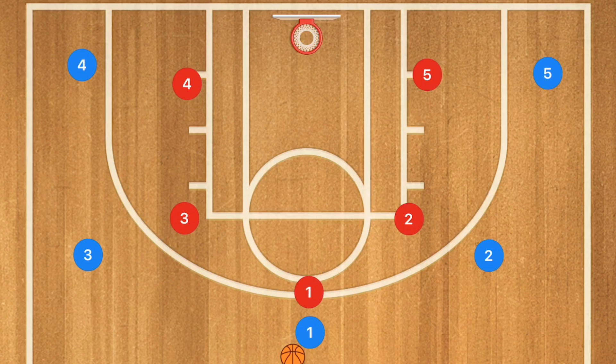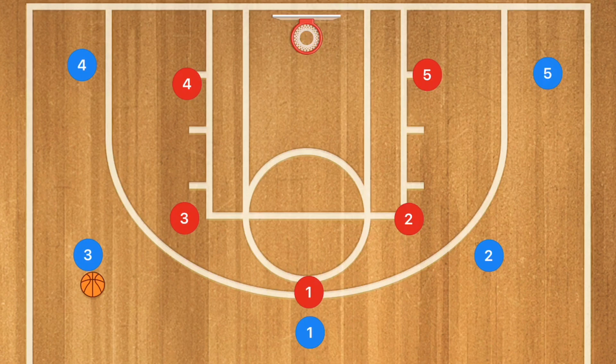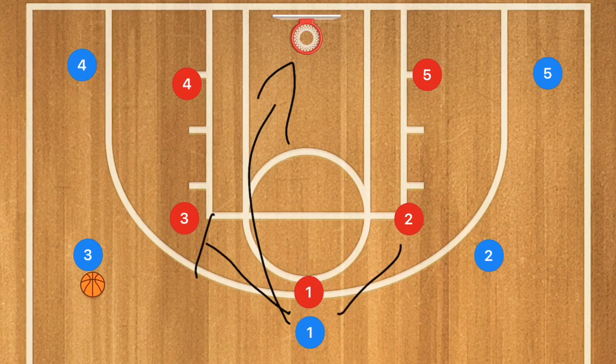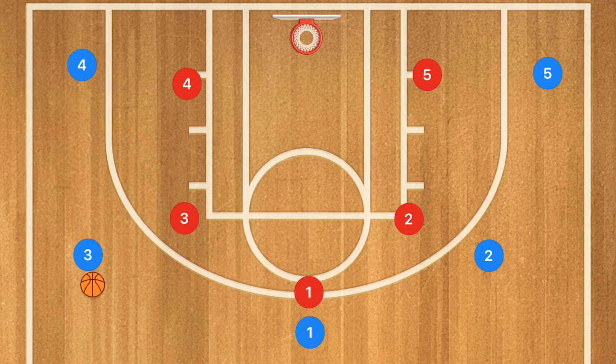Here's a simple five out play you can run for elementary school age players. Player one can pass to player three or player two, but let's say he passes to player three. Player one then has three decisions: he can cut towards the rim, he can screen for the player he passed to, or he can screen away to the player on the opposite side from where he passed.